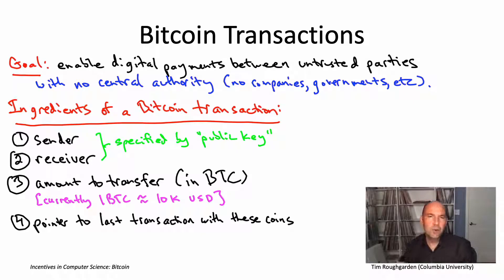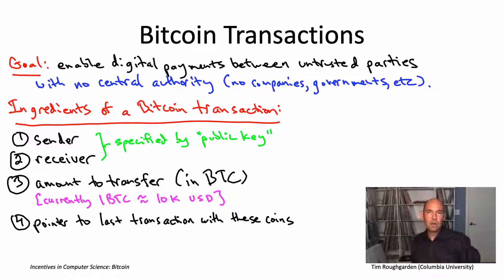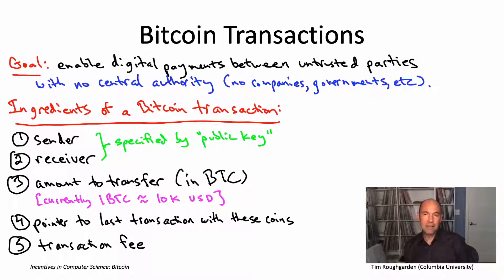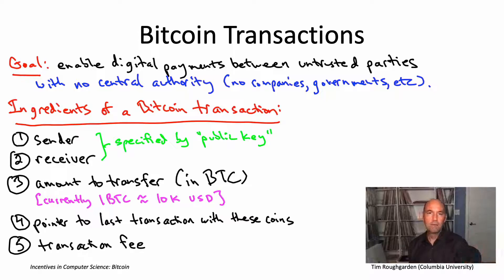And then the final ingredient, which will probably become increasingly important with time but for now we can largely ignore for this lecture, is there's a transaction fee. This transaction fee is paid from the sender to whoever it is who authorizes this transaction. We'll say a lot more about who authorizes transactions and how they do it. But that's what the transaction fee is for — the sender is essentially paying the transaction authorizer for doing the work of authorizing the transaction.